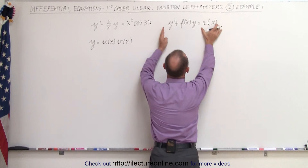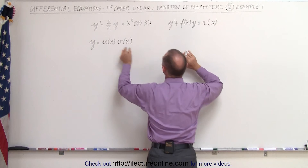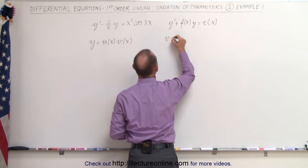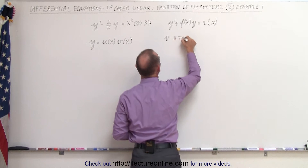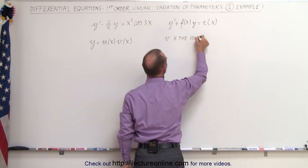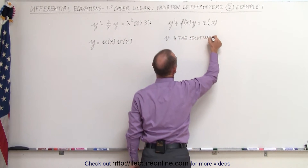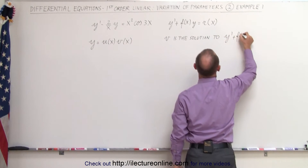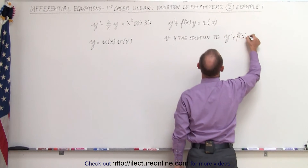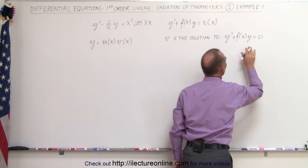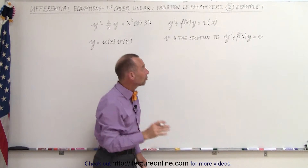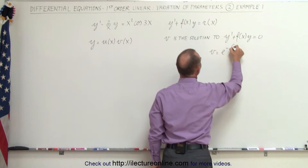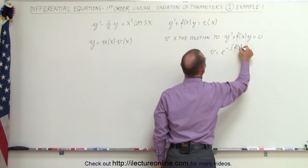So if we let r of x equal 0, then v will be the solution to the homogeneous part of the equation. So v is the solution to y' plus some function of x times y equals 0, which means that v must therefore equal e to the minus integral of f of x dx.